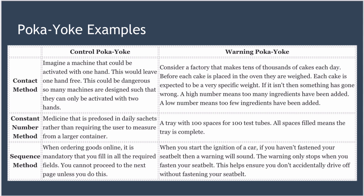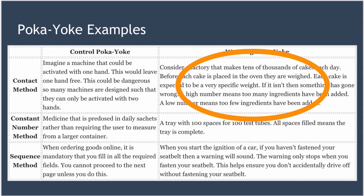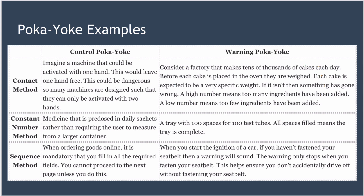Next, the contact method of implementing a warning Poka-Yoke. Think about a factory that makes tens of thousands of cakes every day. Before each cake is placed in the oven, they are weighed. Each cake is expected to be a very specific weight or within a few grams of that weight. If it isn't, something has gone wrong — a high number means too many ingredients, and a low number means too few.